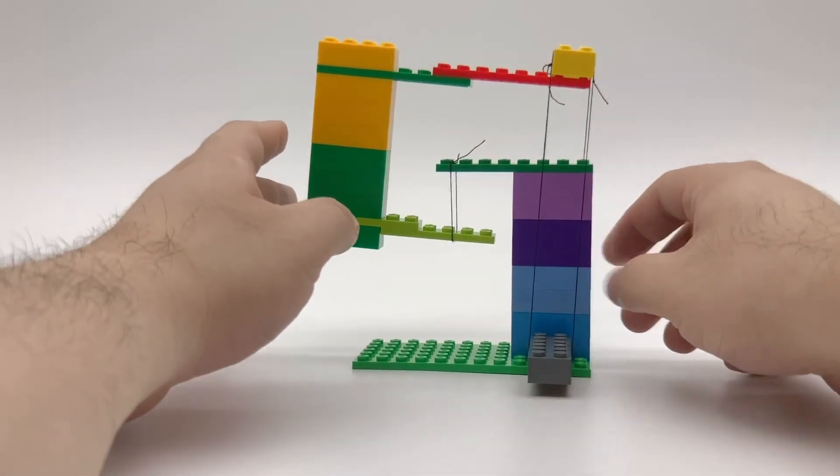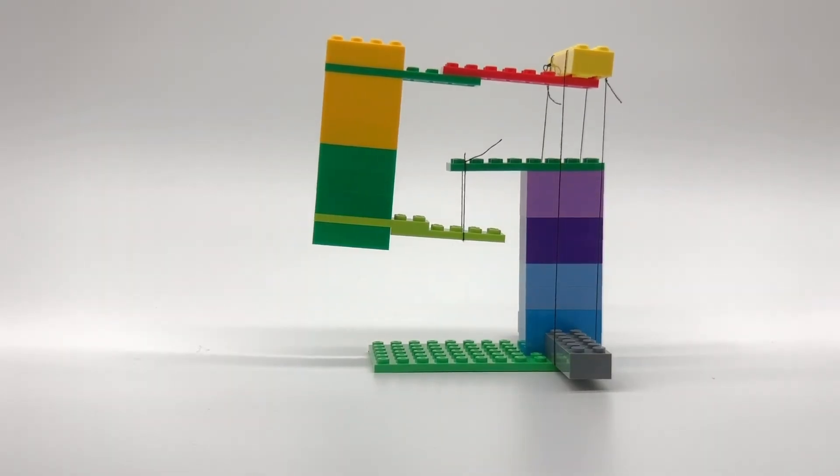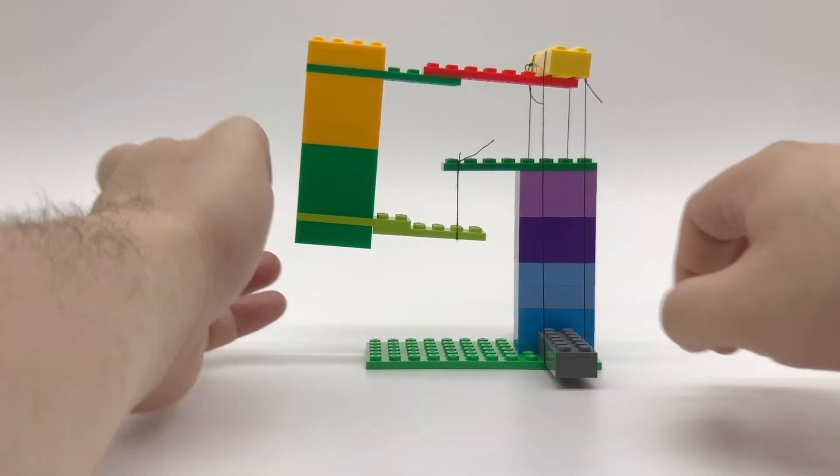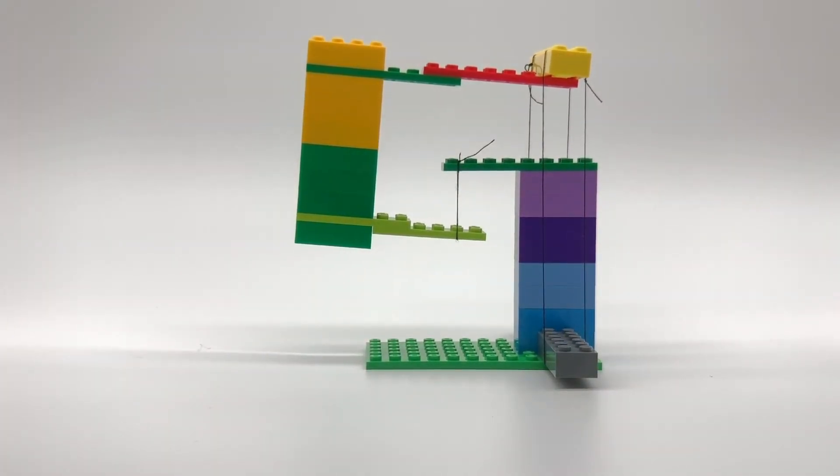I made these with Legos and string, but you can try making these with different materials around the house, like straws or popsicle sticks, and thread or fishing line. Be sure to snap a pic of your creation and send it our way. See you next time!